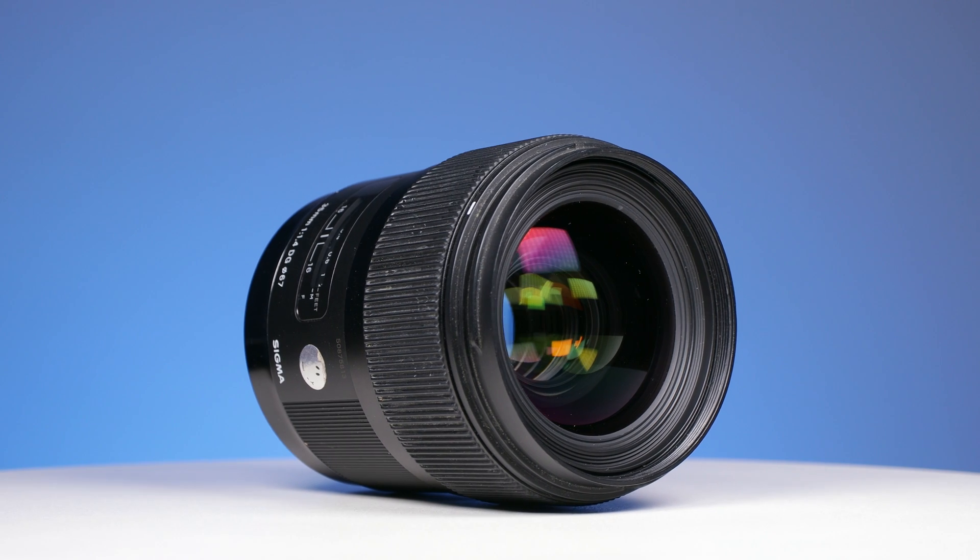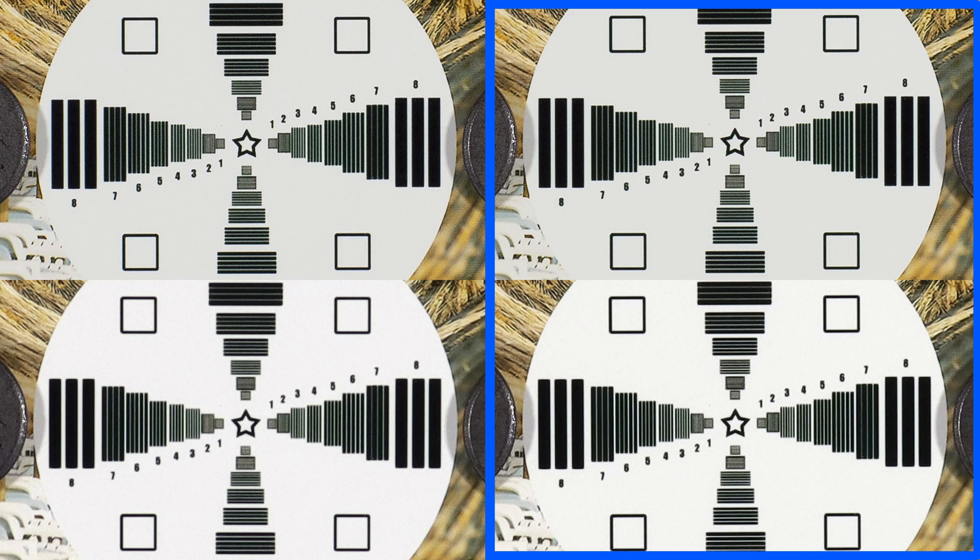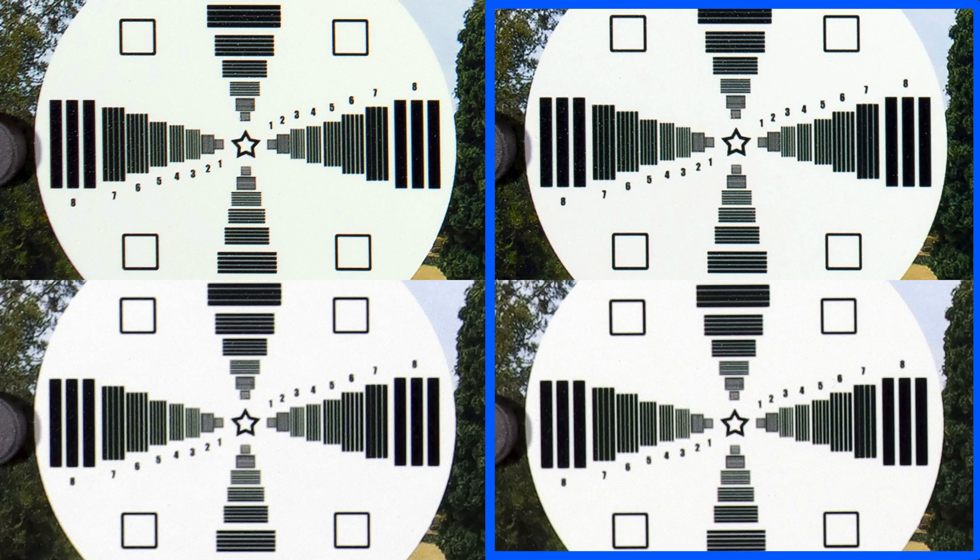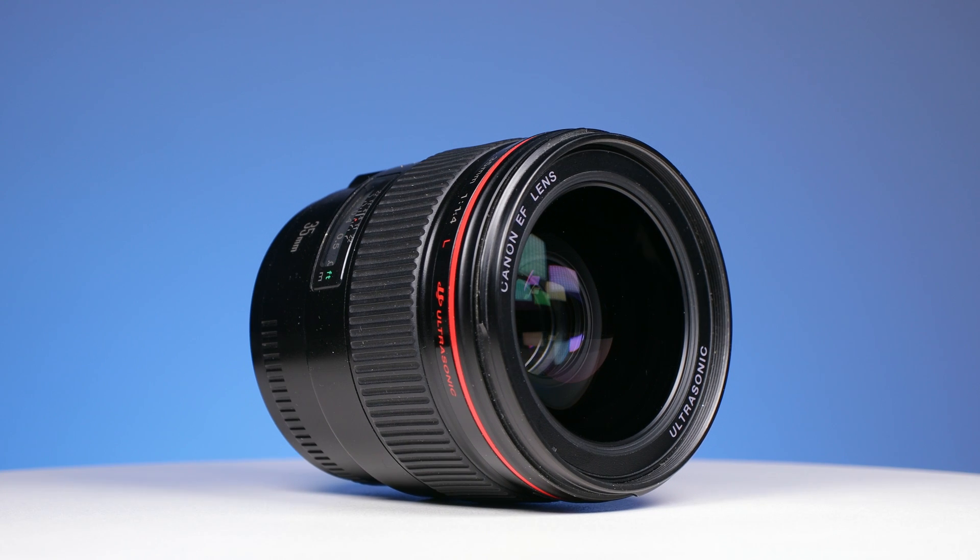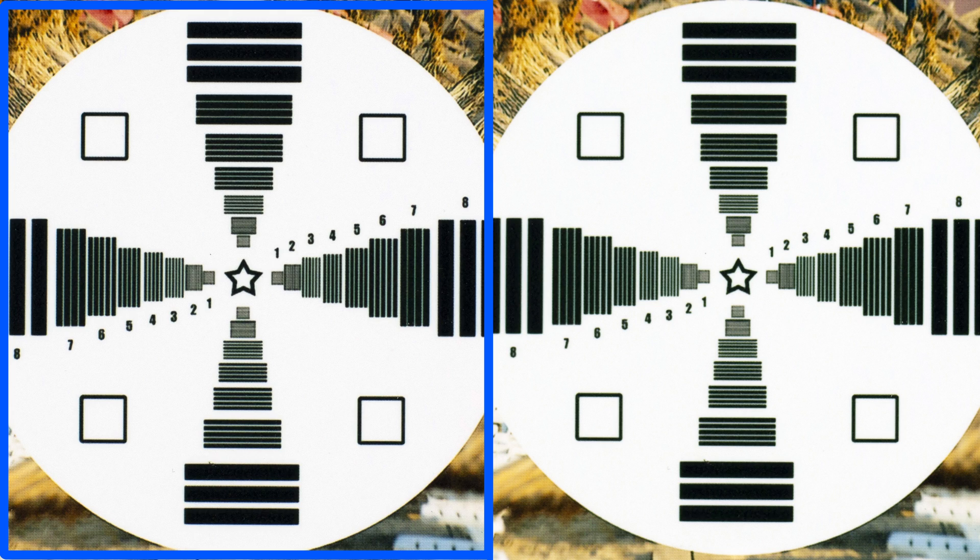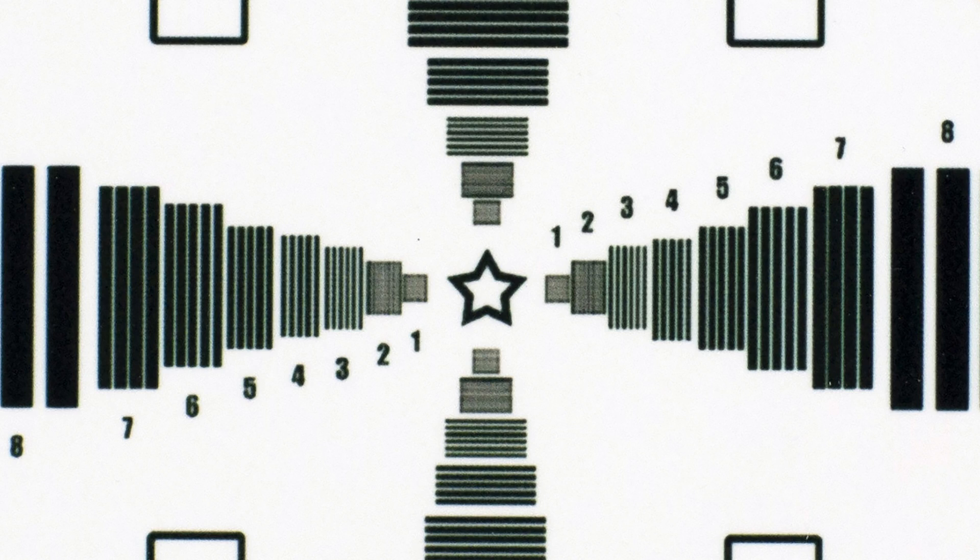In conclusion, the Sigma lens won the first and second round. It is sharper in the middle and in the corner of the image on both full-frame and APS-C sensor cameras. The Canon lens won the third and fourth round. It is just a bit better in close-ups and it also handles diffraction better. We can say that this sharpness battle ended in a tie. The two lenses have very similar performances. But as we saw on APS-C sensor cameras, the Sigma lens is better.